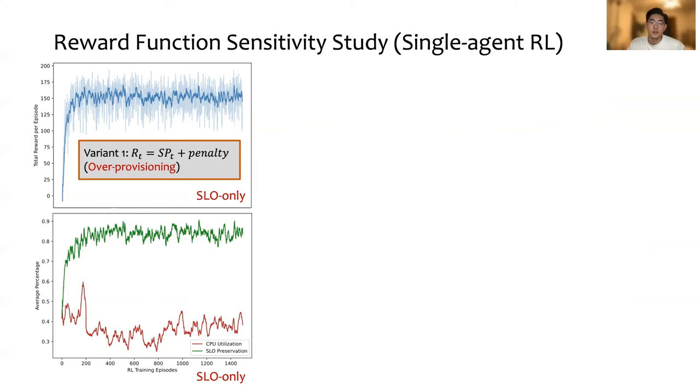After the algorithm converges, the agent learns an over-provisioning resource management policy, because as shown in the bottom figure, the utilization in that curve is quite low, although the SLO performance maintained well.